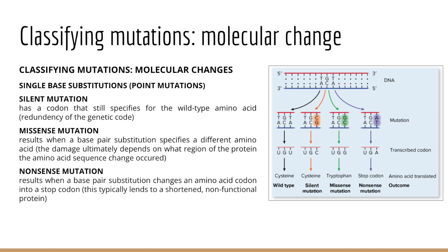Silent mutations are what we call a point mutation — it alters a codon in the mRNA transcript, but it doesn't result in a change in the amino acid at that position in a protein once we translate. Missense mutations include a change in one nucleotide of a triplet codon within a protein-coding portion of a gene that results in a different amino acid at that position once we go through translation. Nonsense mutations include a change in a nucleotide of a triplet codon that leads to the termination of translation — we create a stop codon.